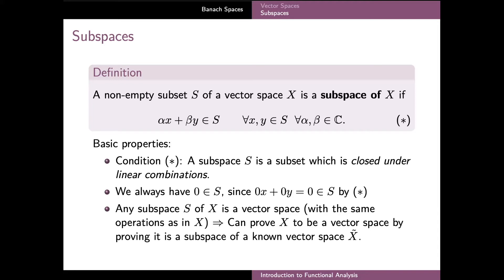It is also straightforward to verify that all the axioms of the vector space are satisfied for the elements of S, which is a subspace, when vector addition and scaling are defined in the same way as on the larger vector space X. This is why every subspace S is itself a vector space. This opens a convenient way of showing that some set X is a vector space, if we can identify X as a subspace of a larger space X-tilde which we have already proved or otherwise know to be a vector space.